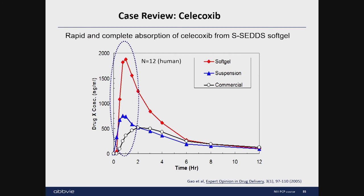The clinical data in humans confirmed these findings. The black profile shows the current commercial capsules used as comparison. The blue curve uses a nanosuspension with slightly higher C-max, but overall AUC is comparable to commercial drug products. The red curve is a softgel containing a supersaturable self-emulsifying drug delivery system, which achieved three-fold higher C-max and two-fold higher AUC compared with the commercial capsule, indicating rapid and complete absorption when using the right technology.